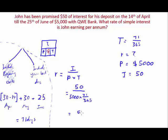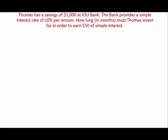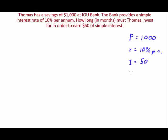So that's 50 divided by 5,000 multiplied by T (71/365). Put this into your calculator and the answer is 5.14% per annum. Now let's go through our last example. Thomas has savings of $1,000 at OOU Bank. The bank provides a simple interest rate of 10% per annum. How long in months must Thomas invest to earn $50 of simple interest? The principal is $1,000, the rate is 10% per annum, and the interest is $50. We must find time.